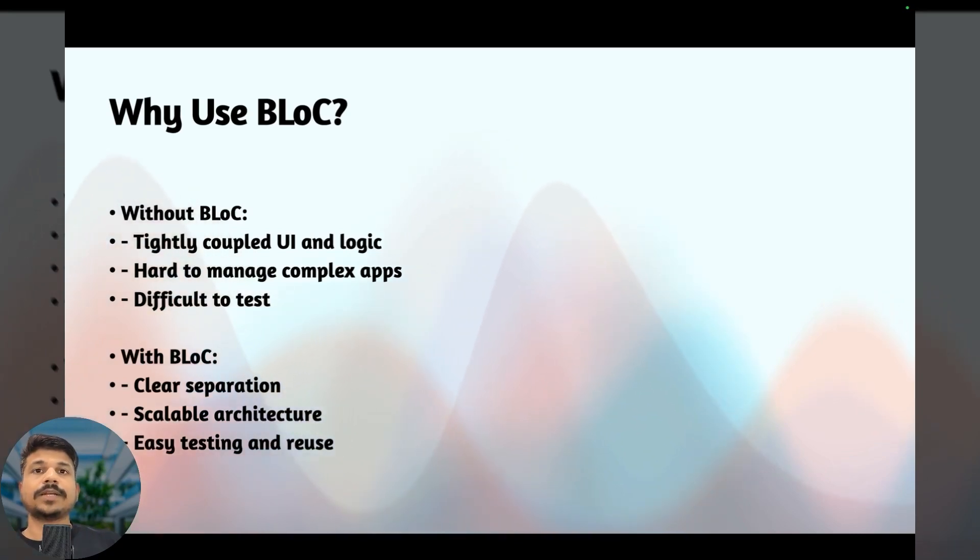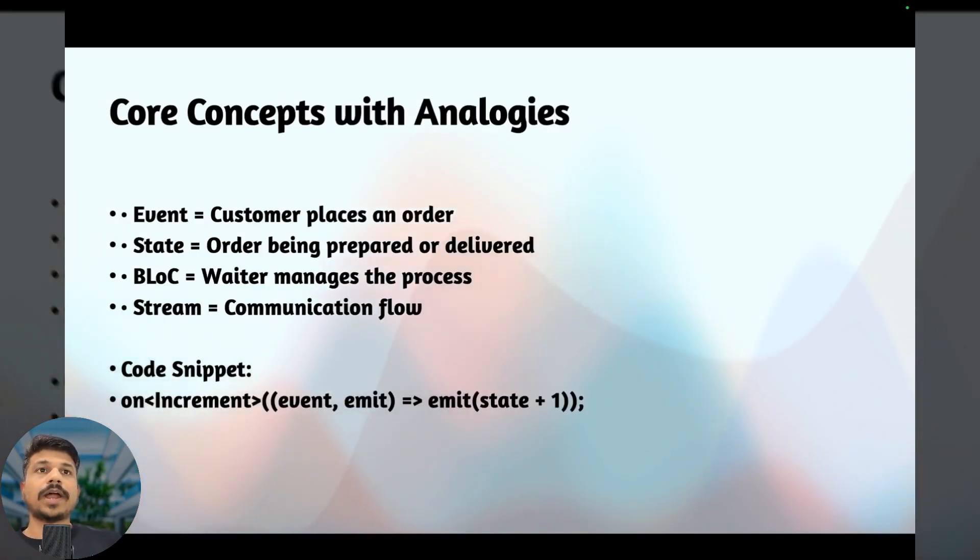Let's break down the core idea of BLoC with a simple real-world example. An event is like a customer placing an order. The state is the meal being prepared or delivered. The BLoC is the waiter coordinating everything between customer and kitchen. The stream is the communication channel where updates happen. When the event happens, BLoC processes it and sends a new state through the stream to update the UI.